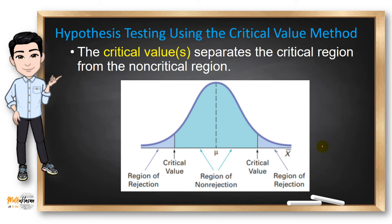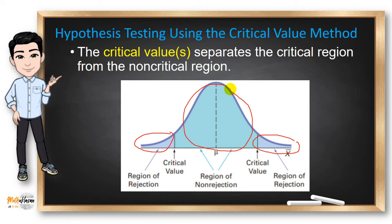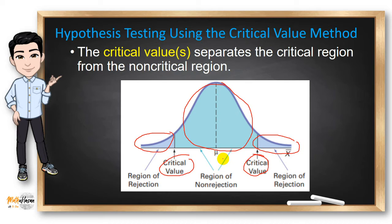The sampling distribution of the test value is divided into two regions: a region of rejection, sometimes called the critical region, and the region of non-rejection, or non-critical region. The value that separates the critical region from the non-critical region is called the critical value. If the test value falls into the region of non-rejection, we do not reject the null hypothesis. On the other hand, if the test value falls into the rejection region, then we reject the null hypothesis.